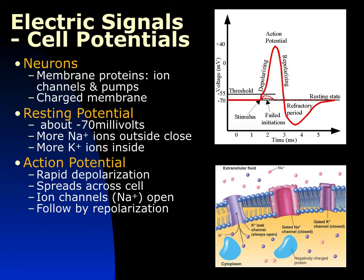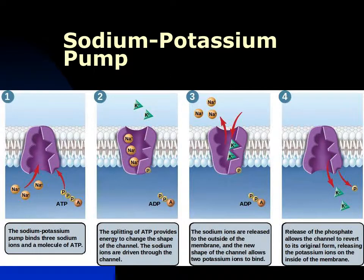After the action potential, the cell repolarizes by moving sodium back and allowing potassium to move. The sodium-potassium pump drives repolarization by using ATP to move three sodium ions out and two potassium ions in. By moving more sodium out than potassium in, the cell returns to its negative resting charge. This allows cells to rapidly spread an electrical change and then quickly restore their resting potential.